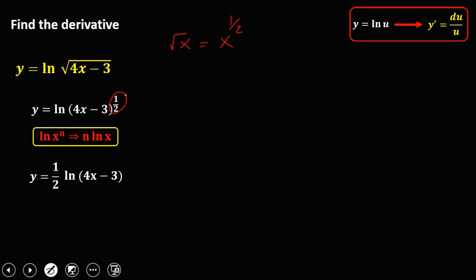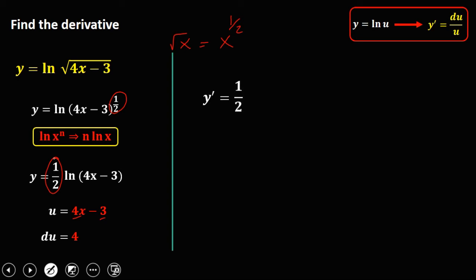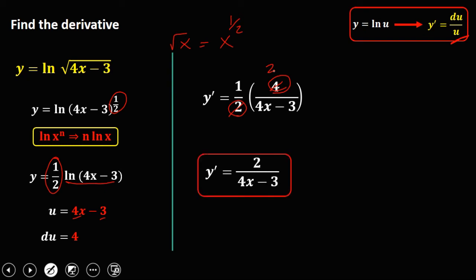To find the derivative: u is 4x − 3, and the derivative of u — derivative of 4x is 4, derivative of 3 is 0 — so du equals 4. Then y prime equals 1/2 times the derivative of ln(4x − 3), which is du over u: that's 4 over (4x − 3). Simplifying 4 and 2 — both divisible by 2 — y prime equals 2 over (4x − 3). So this is the derivative.